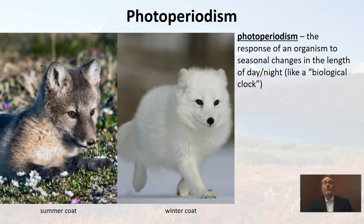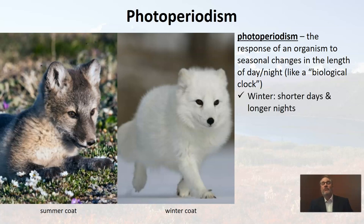Sometimes I've heard this called a biological clock. It's when plants and animals have responses to changes in season. If we look at this arctic fox, we can see that it has a summer coat that is really matched to its environment — that tundra environment. But then in the winter, when its habitat is covered in snow, its coat changes. The fox doesn't have to think about this, but somehow it changes in response to the season. Photoperiodism is the response of an organism to seasonal changes, which are all about changes of day to night.